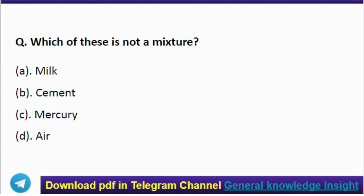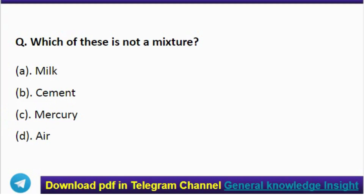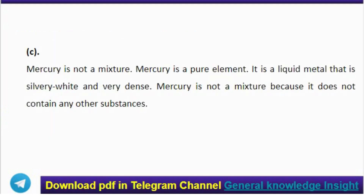Next question: which of these is not a mixture? Correct answer: option C, mercury. Mercury is not a mixture; mercury is a pure element. It is a liquid metal that is silvery-white and very dense. Mercury is not a mixture because it does not contain any other substance.